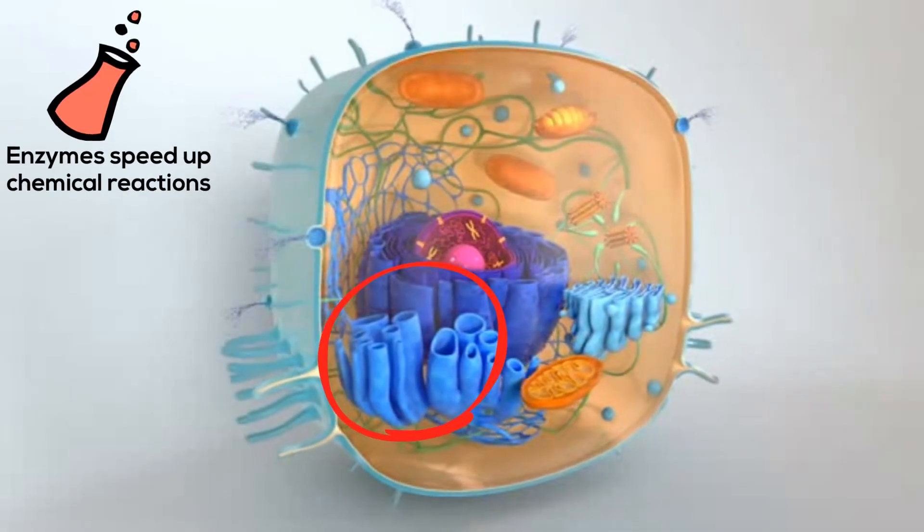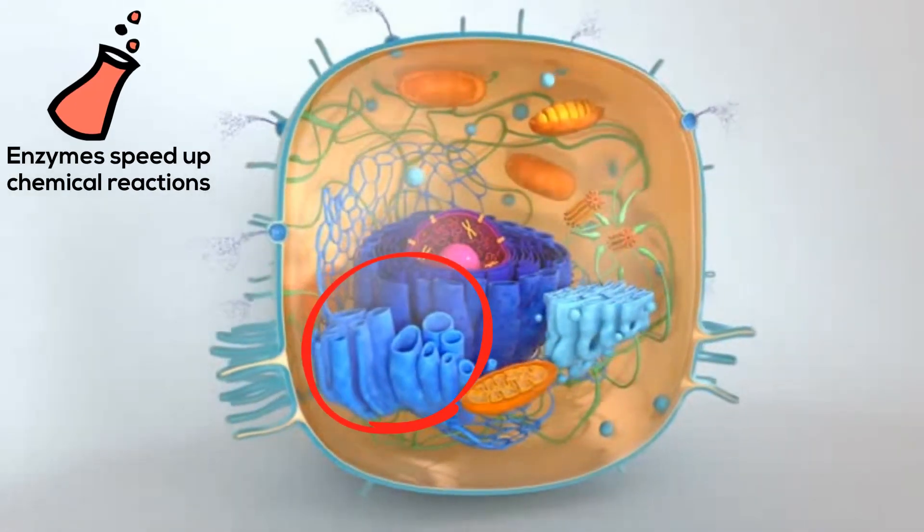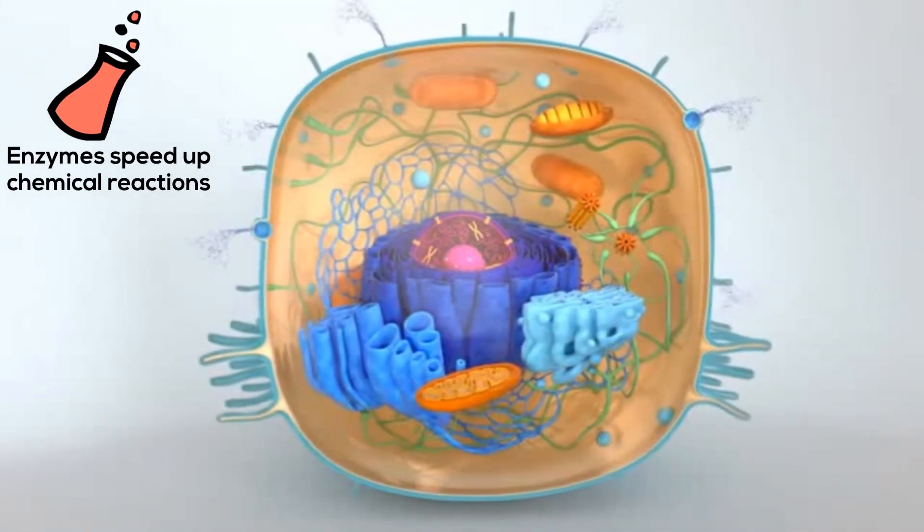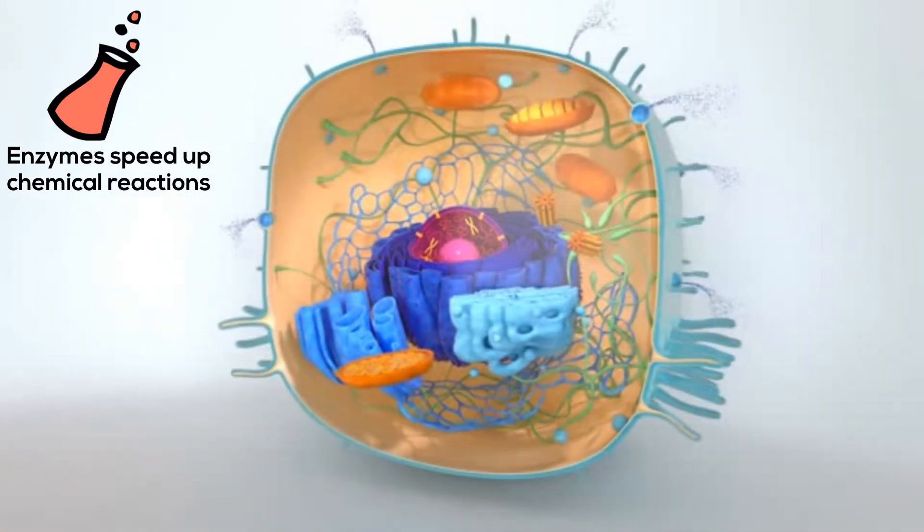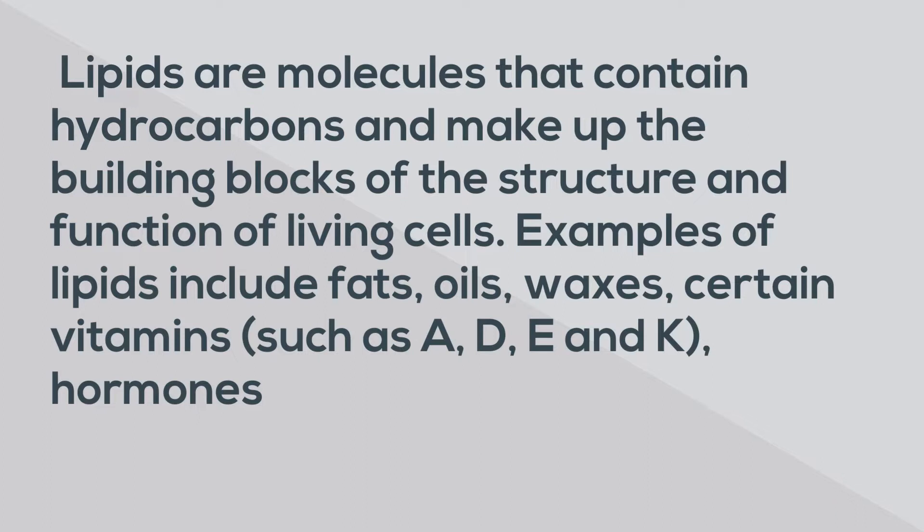The smooth ER produces important chemicals called enzymes, which may pinch off into a vesicle and travel to the Golgi apparatus. Smooth ER also produces lipids, which are important fats used by the cell.